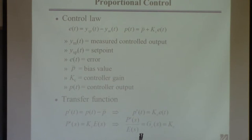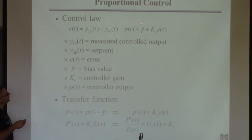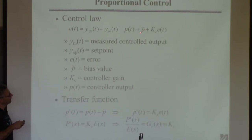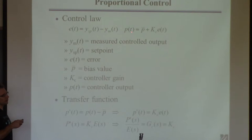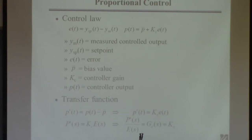How much you act for a given error is determined by the controller gain Kc — an adjustable parameter you have to tune. The bias value compensates for the nominal flow when the error is zero, because zero error doesn't usually correspond to zero flow. Proportional control is the simplest thing we can consider.